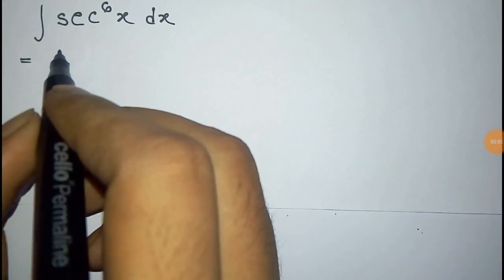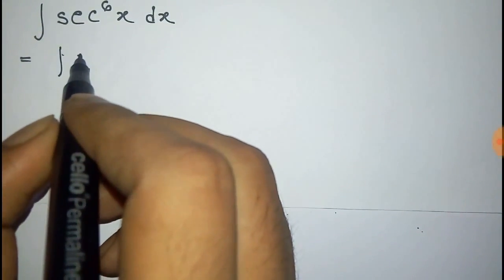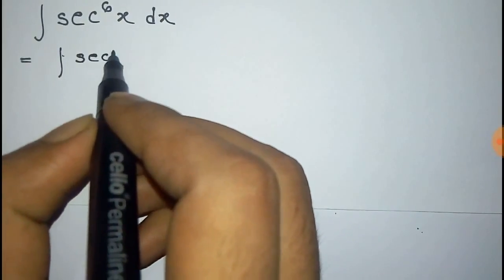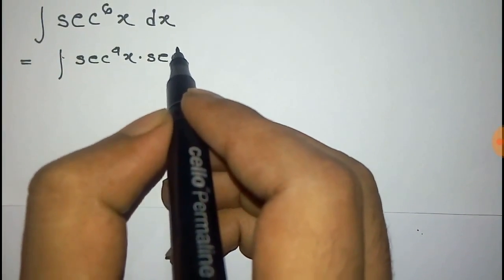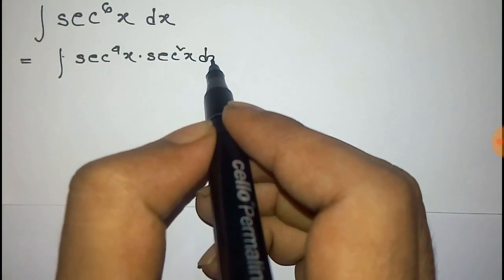We have to integrate sec to the power 6x dx. We can write this sec^6x as the product of sec^4x into sec^2x dx.